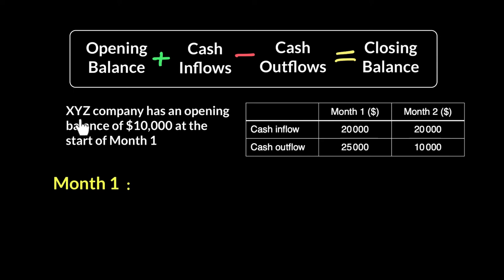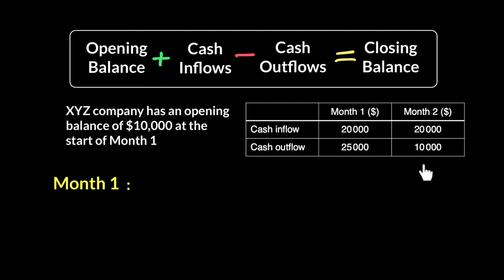So here's a company XYZ, and the situation is given about their cash flow forecast. XYZ company has an opening balance of $10,000 at the start of month one, and we want to calculate what the closing balance of month two is. Between the opening balance of month one and the closing balance of month two, these four transactions have taken place: for month one, a cash inflow of $20,000 and an outflow of $25,000; and for month two, an inflow of $20,000 and an outflow of $10,000.